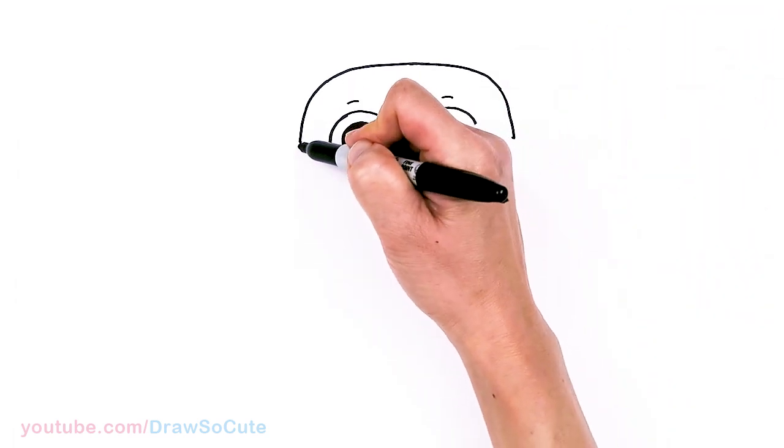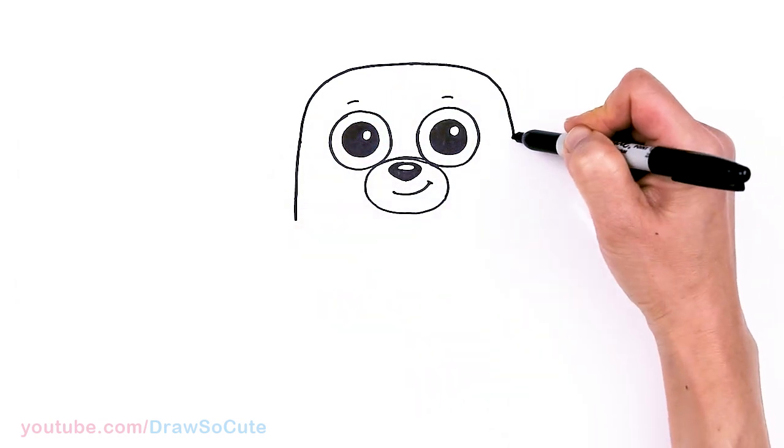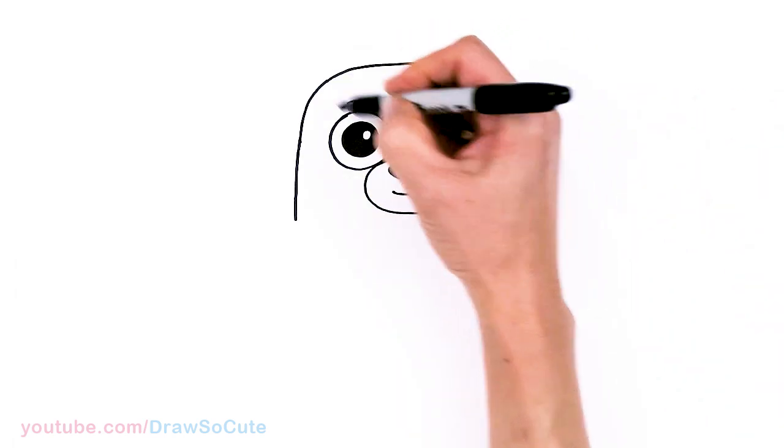And bring it down. And then let's bring this down more. So it's just basically kind of like a rounded off rectangle, almost.